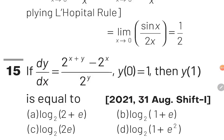The fifth question of the chapter is: if dy/dx = (2^(x+y) - 2^x) / 2^y, with y(0) = 1, then the value of y(1) is equal to? To solve this question, we'll have to separate the variables — all terms with y written with dy and all terms with x written with dx. After this, we do integration on both sides to get the final answer.